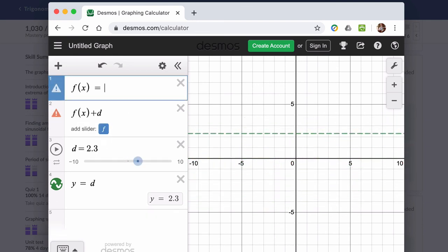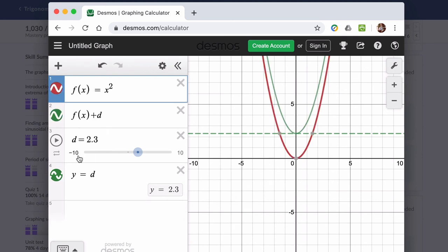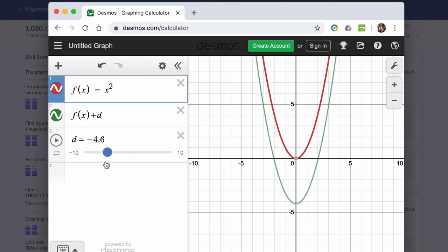If f of x was, let's say, x squared, a parabola. Here the midline doesn't apply, so we can get rid of that. But here if I add or subtract, the function moves up or down.